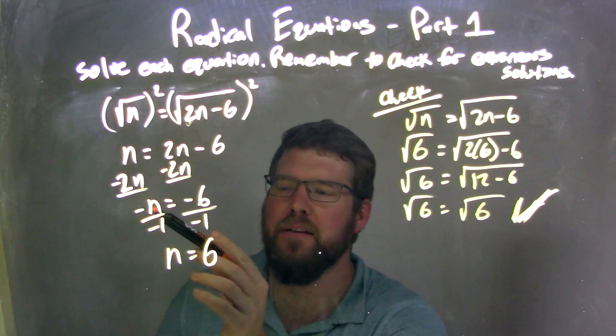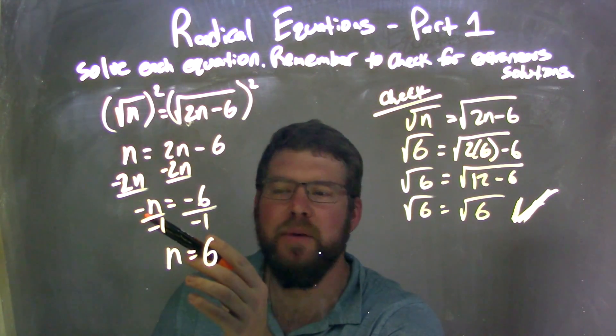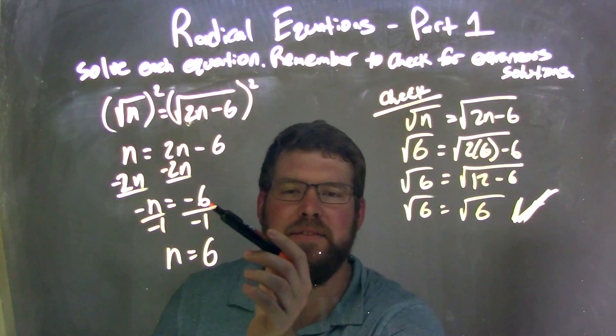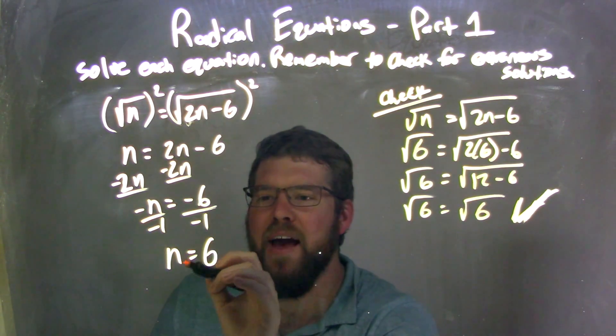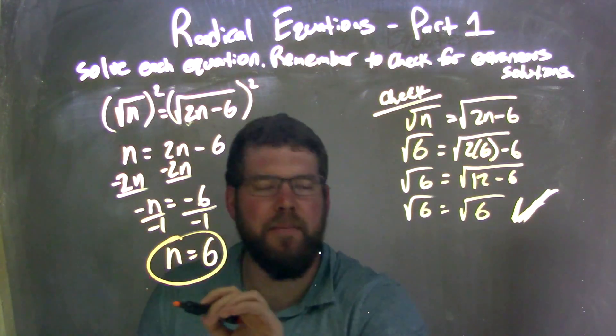I had to combine my like terms, so I subtracted the 2n to both sides, leaving me with negative n equals negative 6 divided by negative 1 to both sides, getting rid of the negatives. And I have n equals 6 right there, positive 6.